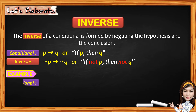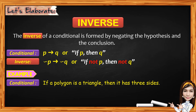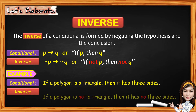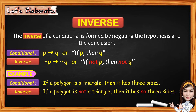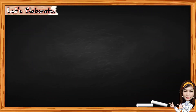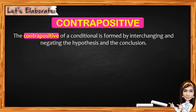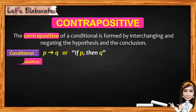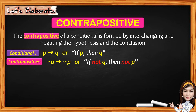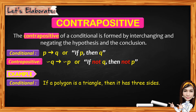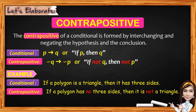For example, given the conditional: if a polygon is a triangle, then it has three sides. And for the last statement, we have the contrapositive. The contrapositive of a conditional is formed by interchanging and negating the hypothesis and the conclusion. For the conditional if P, then Q, the contrapositive is if not Q, then not P. So we both interchange and negate the hypothesis and the conclusion. For example, given the conditional: if a polygon is a triangle, then it has three sides. The contrapositive is: if a polygon has no three sides, then it is not a triangle.